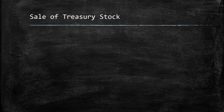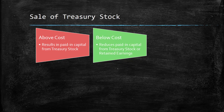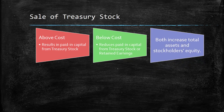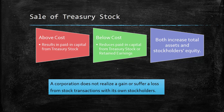Now let's look at the sale of treasury stock. The sale of treasury stock could occur above cost, meaning for more than what the company paid to acquire it back from the market, and that results in paid-in capital from treasury stock. They also could end up selling it below what they paid, which is below cost. That reduces paid-in capital from treasury stock and it could even reduce retained earnings. Either way, both above cost and below cost result in an increase in total assets and stockholders' equity. A corporation does not record a gain or a loss from the sales of treasury stock — we just record it above cost or below cost and adjust the paid-in capital accounts.